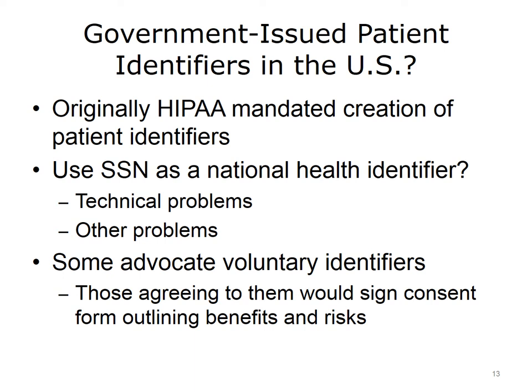There are a number of technical issues with Social Security Numbers. First, there are many duplicates, estimated to be up to 3-5% of all numbers. Second, when someone dies, their Social Security Number is eventually recycled and assigned to someone else. There is no check digit to validate a Social Security Number when transmitted. The Social Security Number is used for many other purposes, and has even been found to de-identify individuals in public health data sources. Some have suggested voluntary identifiers, where those agreeing to the value of a national health identifier would sign a consent form and be assigned one. A standard has been developed for this, but there has not been implementation of such a program.